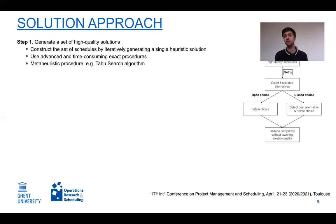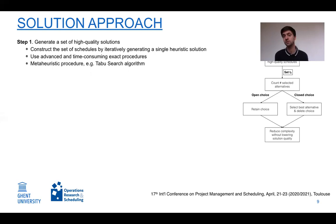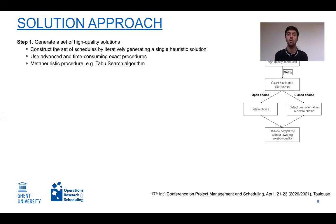Meta-heuristic procedures are fast and, by definition, consider a set of high quality solutions — either by means of different populations, as in a genetic algorithm, or through an improvement procedure such as tabu search.